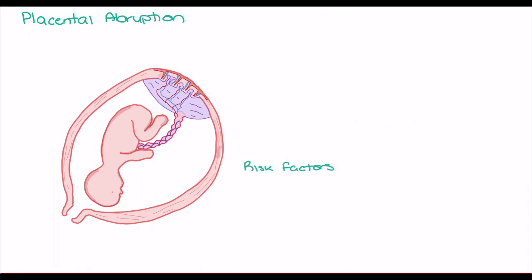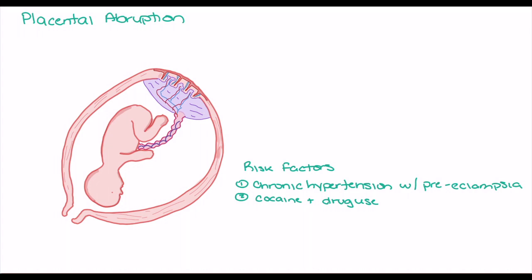A number of risk factors exist for placental abruption. The two most highly correlated causes include chronic hypertension with preeclampsia, as well as cocaine and sympathomimetic use. Both are highly related to decreased vessel integrity and consistent basal constriction, leading to weak vessels under high pressure that are more likely to rupture. Additional factors with lower correlation also lead to an increased chance of vessel weakening and rupture.